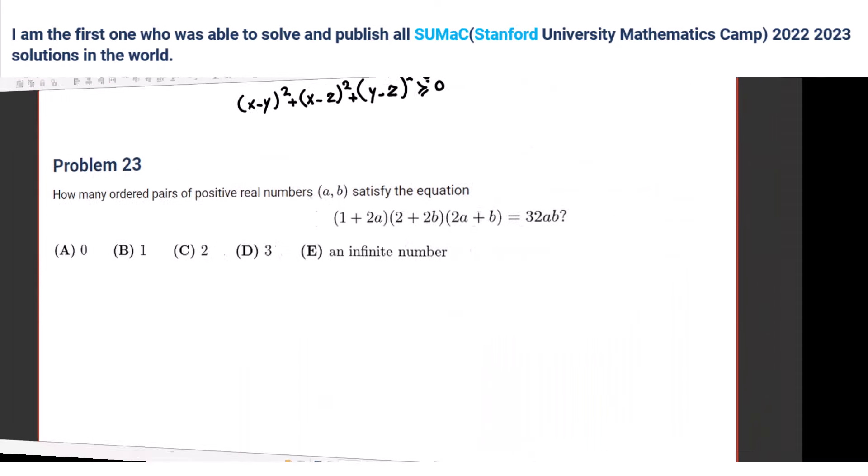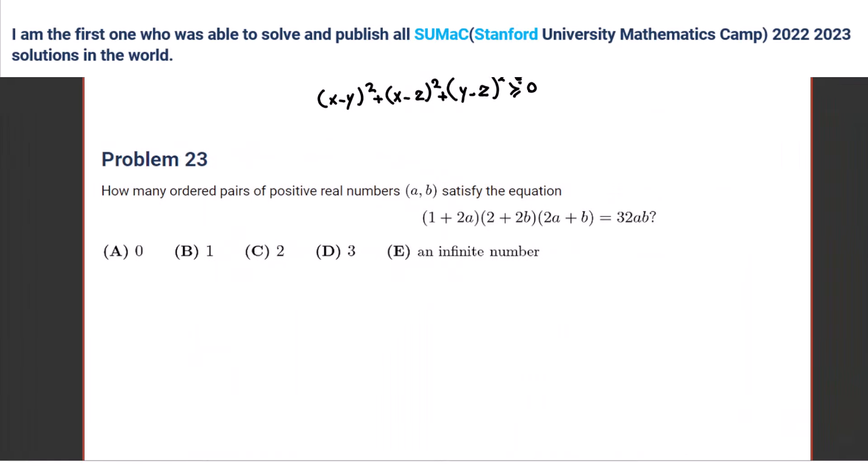Can I get a hint? Sure, so for this one if you want to use AM-GM, since a and b are positive real numbers, we can easily use AM-GM, right? Yeah, okay. So if you use AM-GM for the first bracket, it will be what?